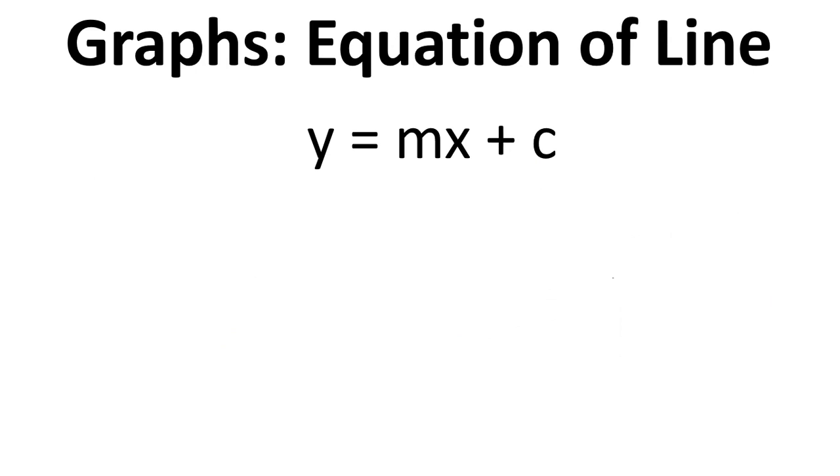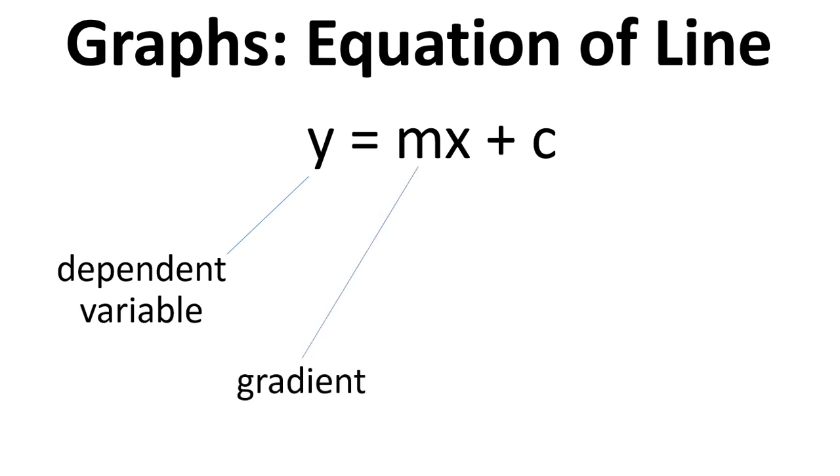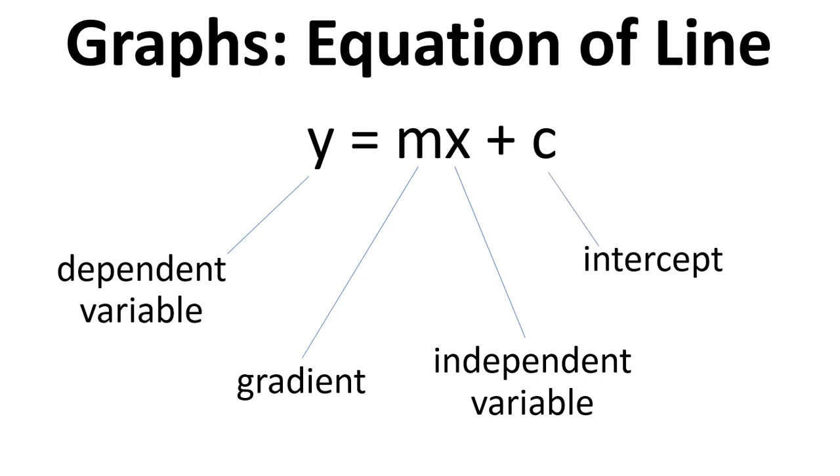Now in terms of the equation for that line of best fit, the general form is Y equals MX plus C. Now we refer to Y as the dependent variable because that's the thing that we're measuring and it depends on the time point that we're at if we're measuring something versus time. M is the gradient. X is the independent variable. So for the example we've just been seeing, that's time. So that's just time just marches forward and we measure at different time points. So that's independent of what we're doing. And then there's the intercept C.